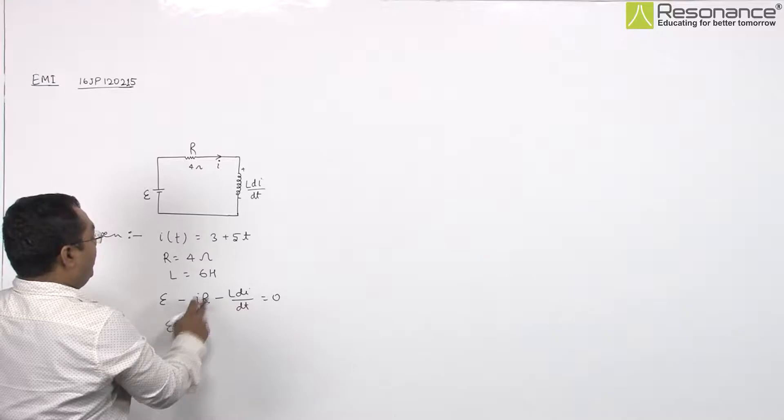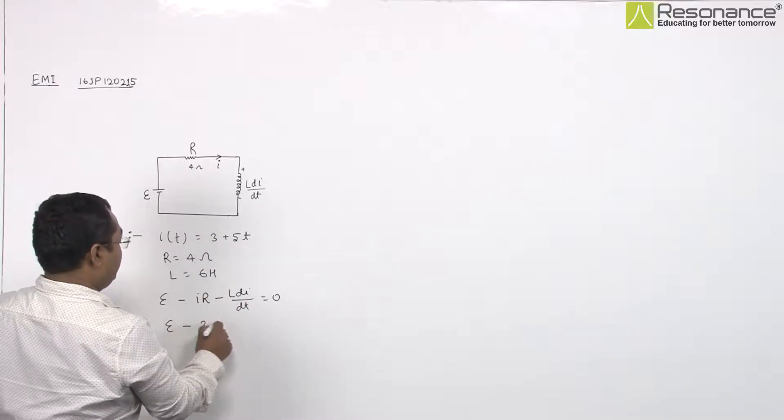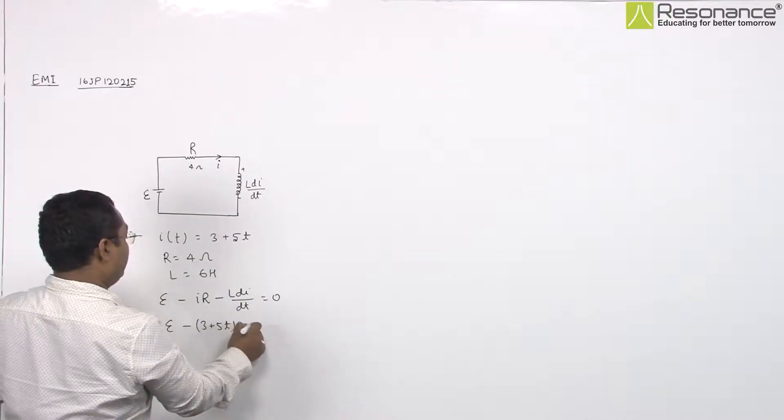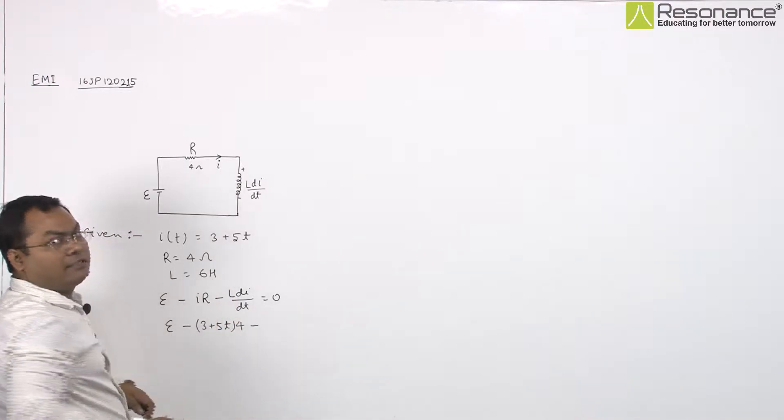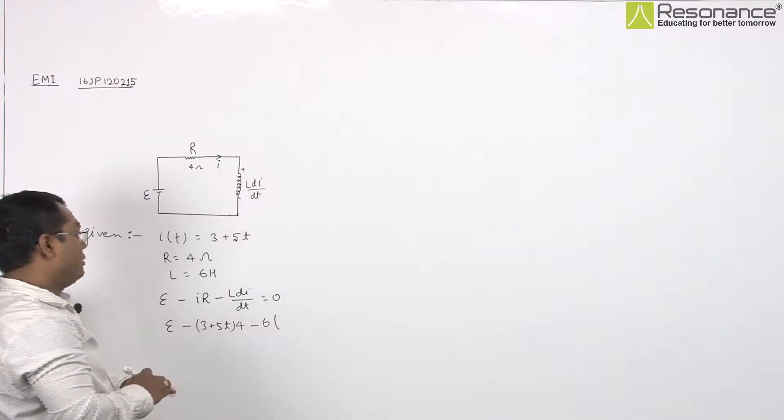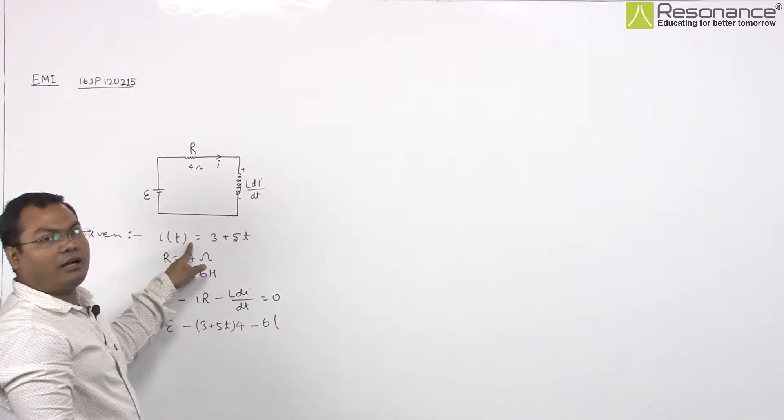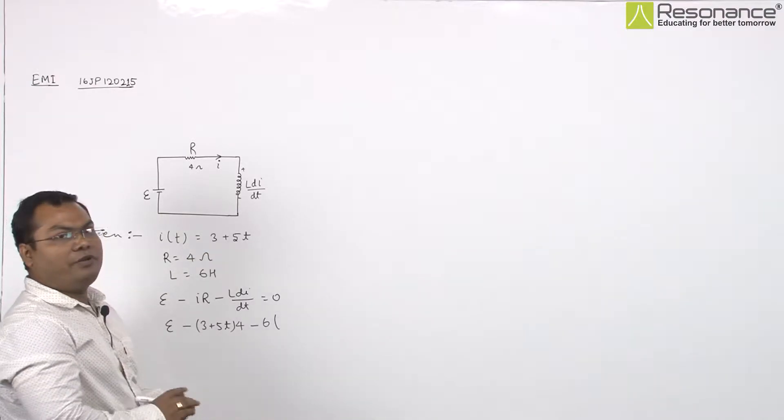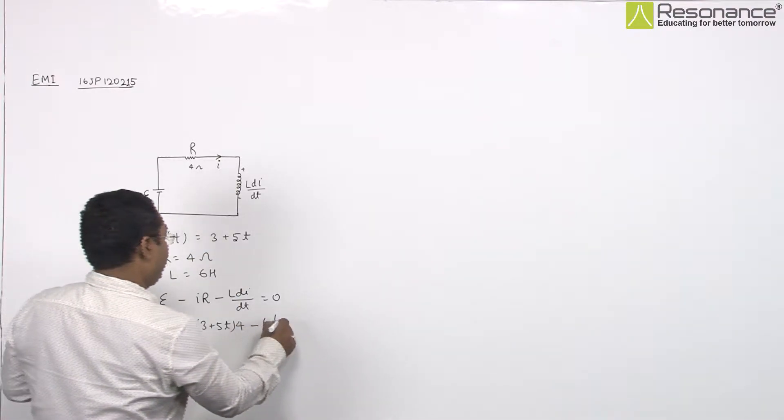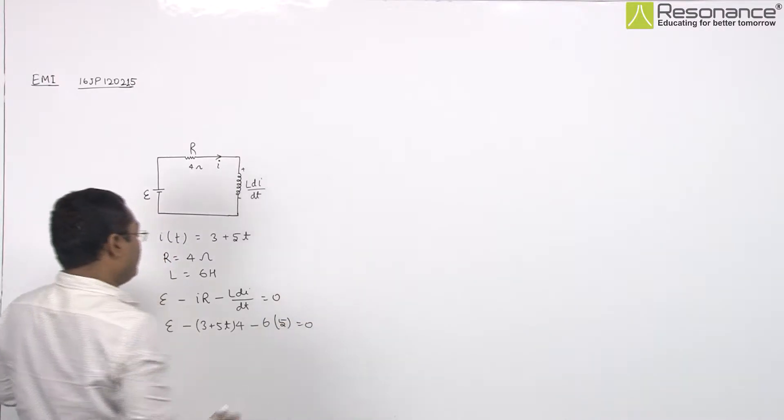E minus I whose function is 3 plus 5T multiplied with 4 minus value of L is 6 and di by dt given I as 3 plus 5T, so di by dt will be simply 5 is equal to 0.